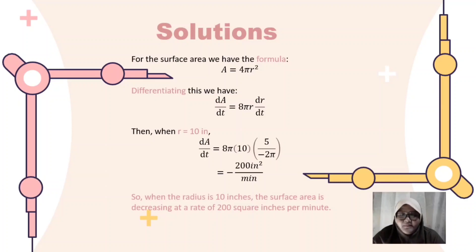Differentiating this, we have dA/dt is equal to 8πr times dr/dt. Then, when r is equal to 10 inch...